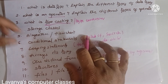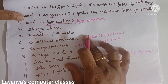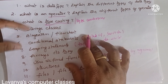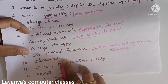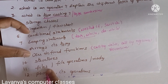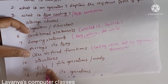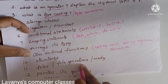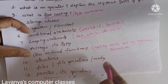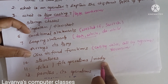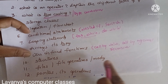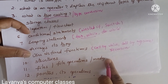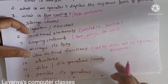Next is structures: what is a structure and how to declare one, with an example program. Once you learn structures, unions follow naturally since they share the same concept. The difference between structure and union is a very important question. Next are files: what is a file, the different types of files, file operations, and file modes — these are very very important.